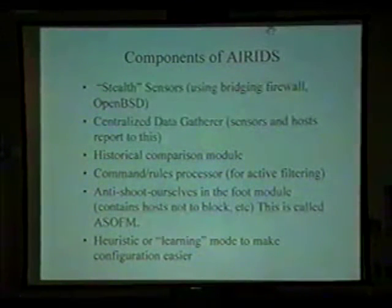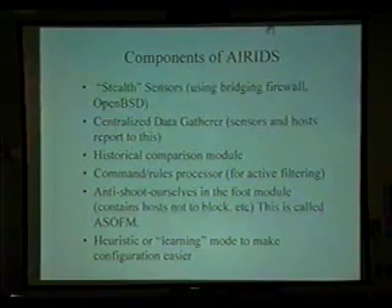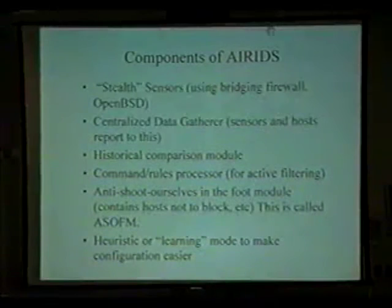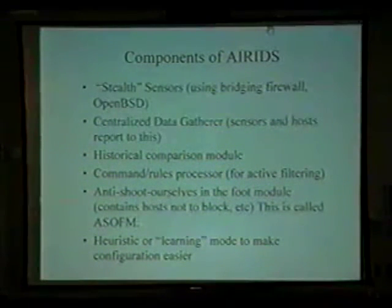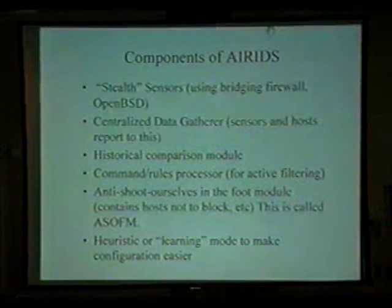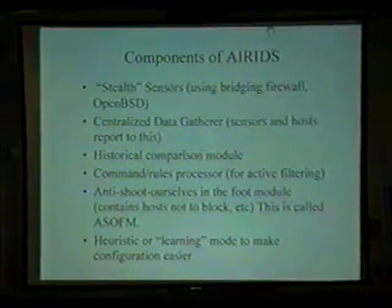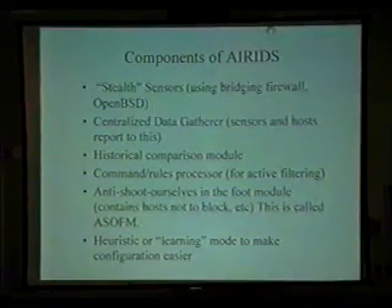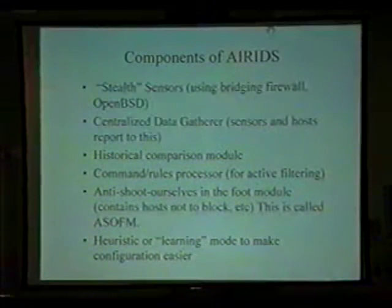Components of AIR IDS. The stealth sensors — they are bridging firewalls with OpenBSD, and we use PF rather than the other one because of the licensing issue. The centralized data gatherer: the sensors and hosts report to this. Typically this is going to be an industry standard database, whether it be MySQL or Postgres. The problem with MySQL is if you have a lot of data coming in, it doesn't do transaction queuing, so MySQL will just choke because it does blocking I/O when you start getting multiple data sources. You've got 17 Snort sensors reporting to one database and suddenly MySQL just can't handle it. So it's just a database — one which can handle transaction queuing and can do threads, because you're going to have to do threads to keep up with the speed of the network.